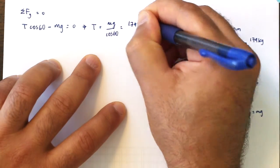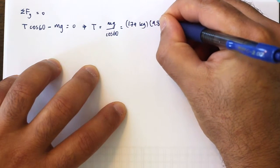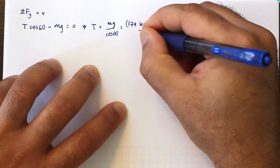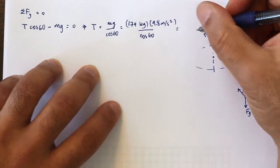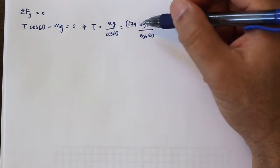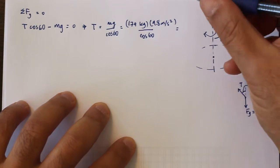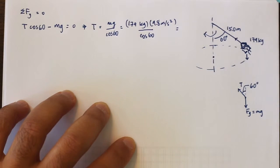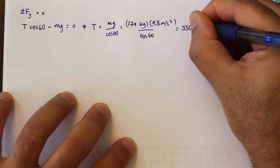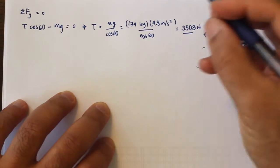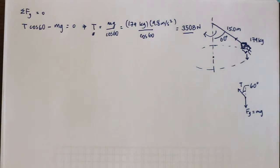From the vertical equilibrium, the tension is equal to mg over cos60. Putting in the numbers: 179 kilograms times 9.8 divided by cos60. That's roughly 1800 divided by cos60, which will be almost double 1800. Working it out, the tension is 3508 newtons.